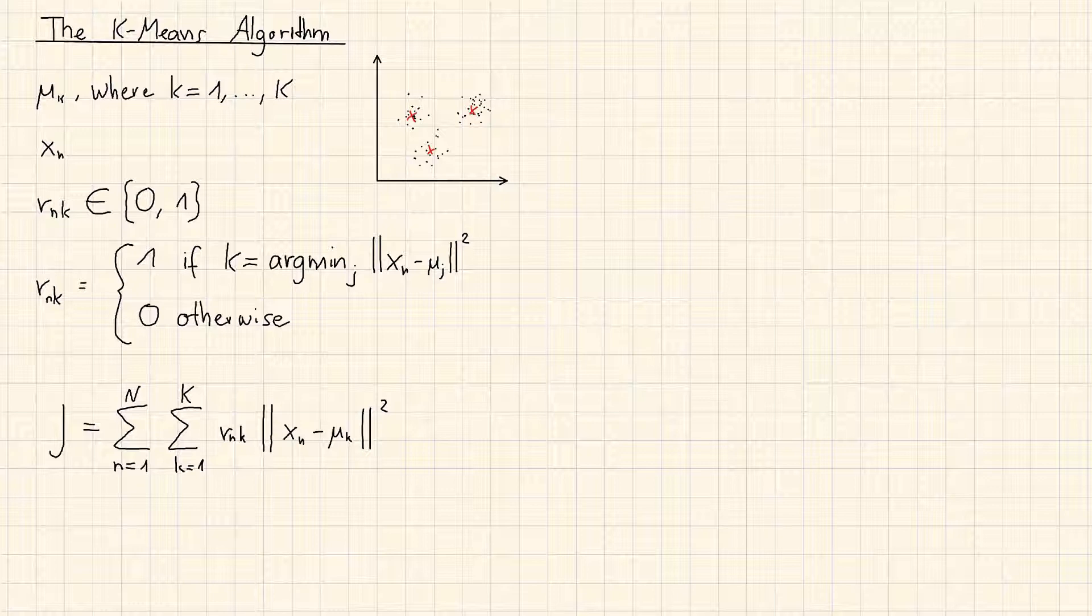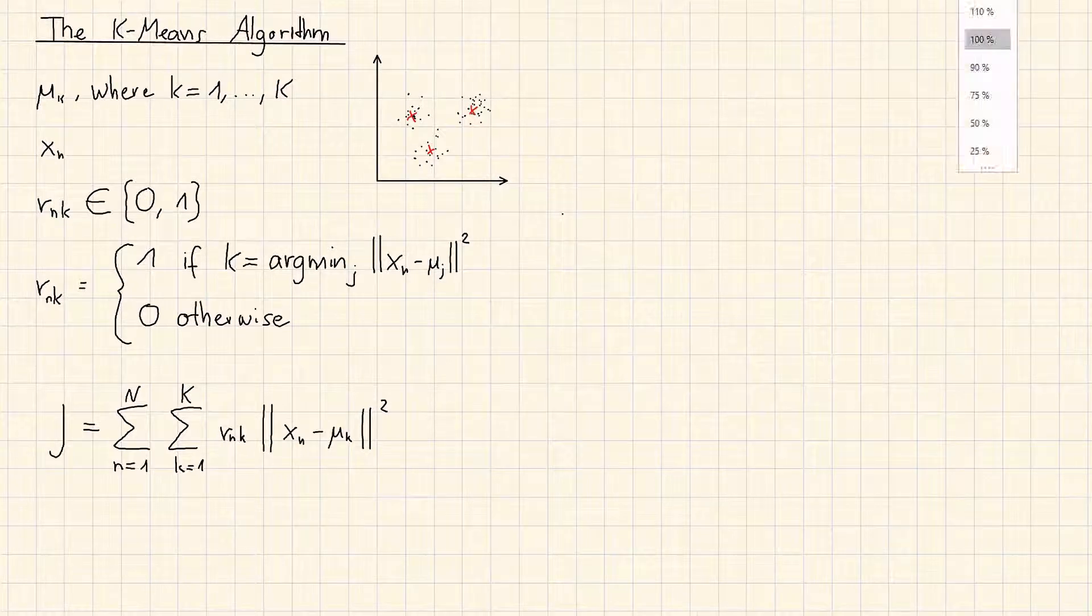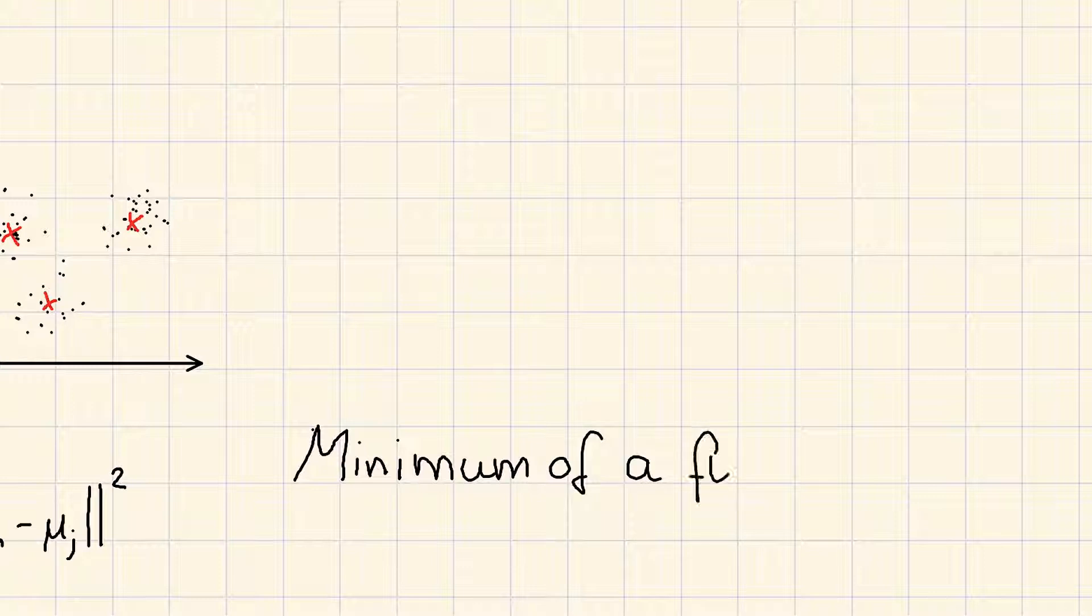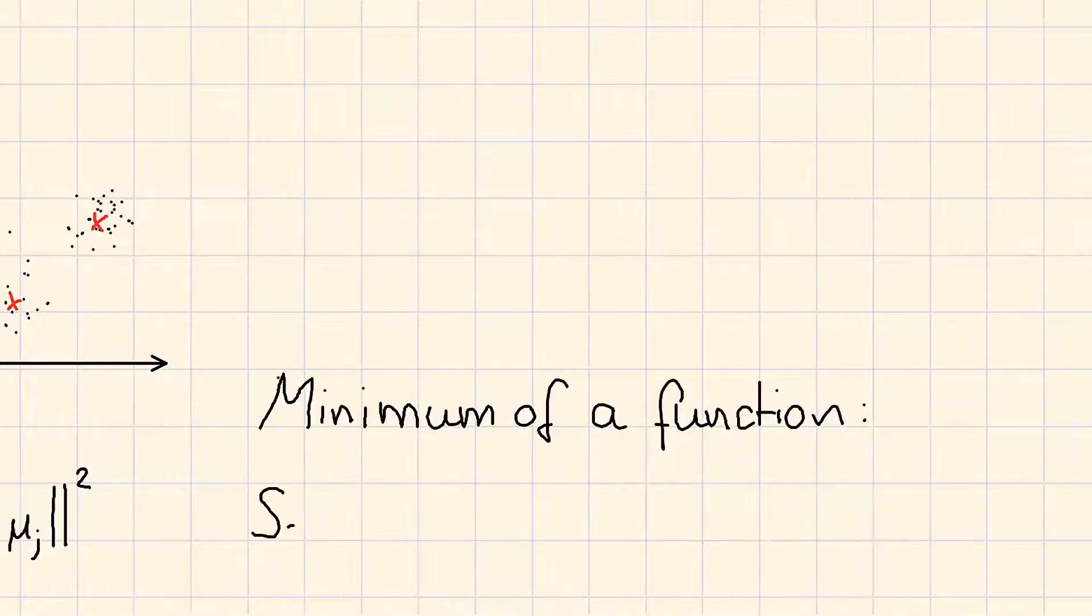Remember, this is a function which indicates an error measure. We want to get the minimum value of this function. To find a minimum of a function, we have to take its derivative and set the derivative to 0.